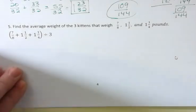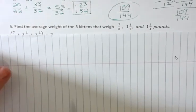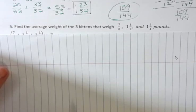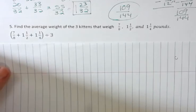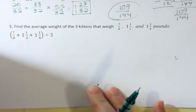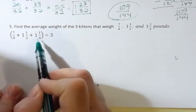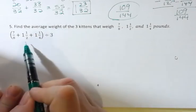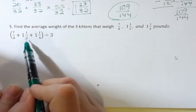Find the average weight of the three kittens that weigh seven eighths, one and a half, and one and a fourth pounds. I already wrote the problem down for this. An average is you add everything together, and then you divide by the number of things that you added. So because we're adding everything together first, that's in parentheses, and I can rewrite these as improper fractions.